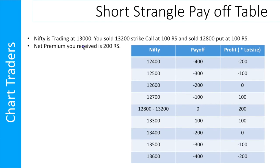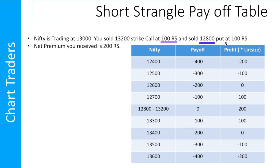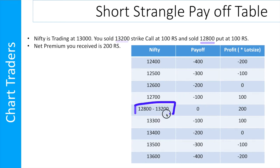Assume Nifty is at 13,000. You sell the 13,200 call at a price of 100, and you sell the 12,800 put at a price of 100. So you can sell both. If Nifty expires between 12,800 and 13,200, you will get the full 200 premium.